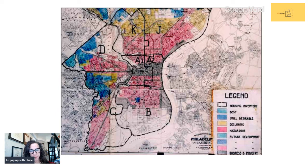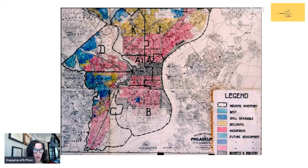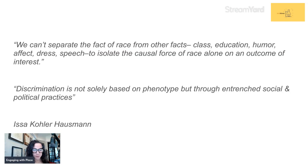One of the examples we'll be using will be redlining and the housing authority in the 1930s. We're going to look at how population demographics were shaped, using transparency to speak very specifically about the influence of the built infrastructure on populations. Discrimination is not solely based on phenotype, but through entrenched social and political practices.